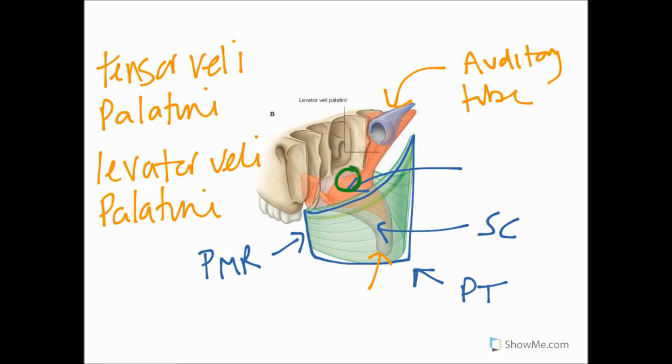The tensor comes down from the sphenoid bone and attaches to part of the fibrous part of the auditory tube. It inserts onto the palatine aponeurosis, which is in this region. Its job is to tense the soft palate and assist in opening the auditory tube.